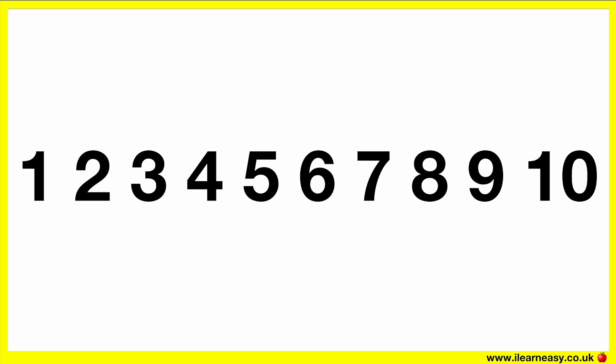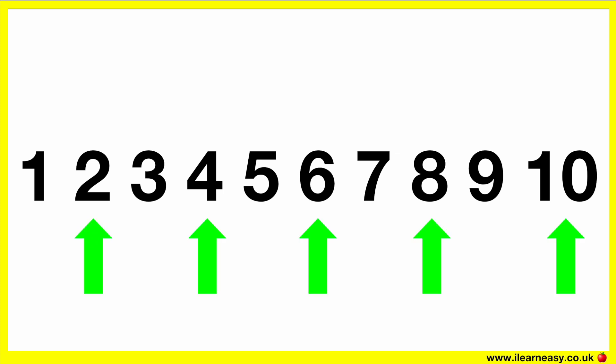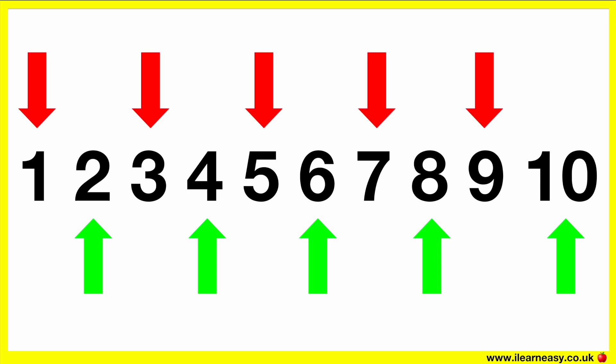There are even and odd numbers. The even numbers are 2, 4, 6, 8 and 10. The odd numbers are 1, 3, 5, 7 and 9.